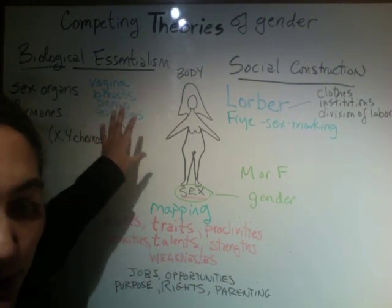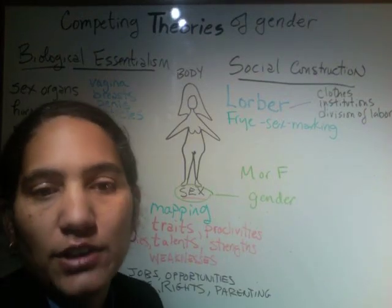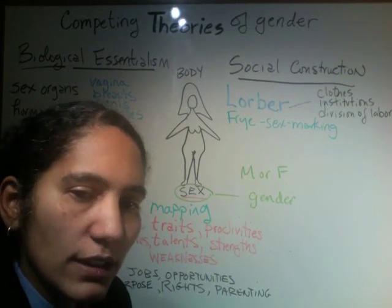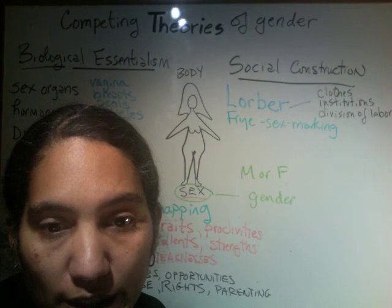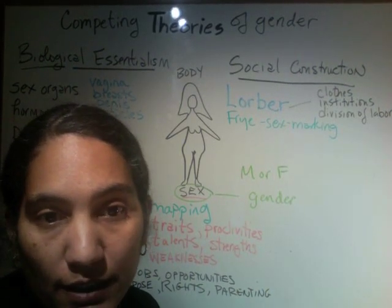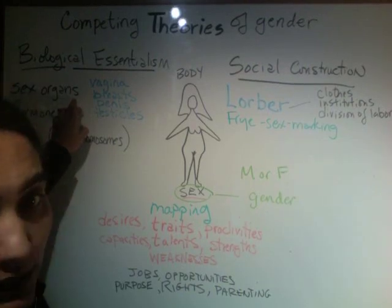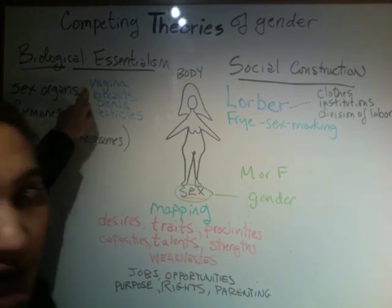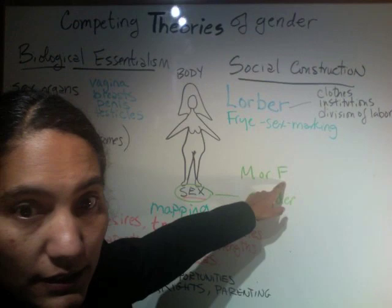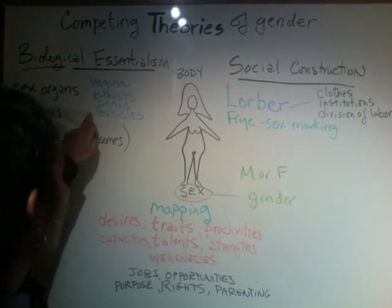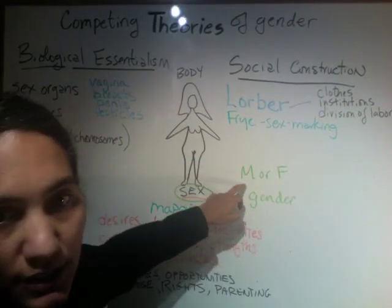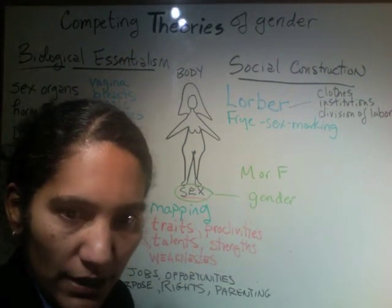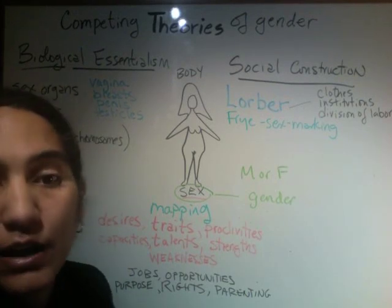The biological essentialist would say that we get gender from the body — it's a direct one-to-one correspondence. So a baby is born and you can figure out its gender just by knowing its biological sex. You can look at the sex organs: if a person has a vagina and breasts, that person is female; if the person has a penis and testicles and does not have a vagina and breasts, that person is male. All of our notions of masculine and feminine come directly out of the body.